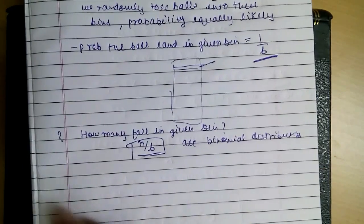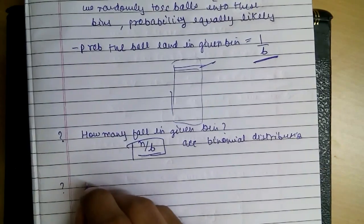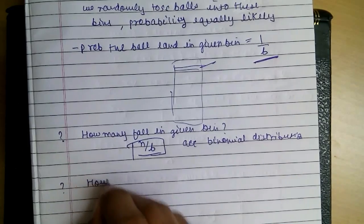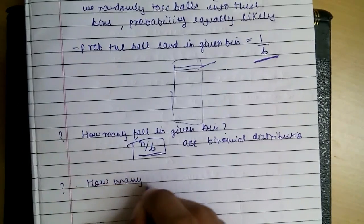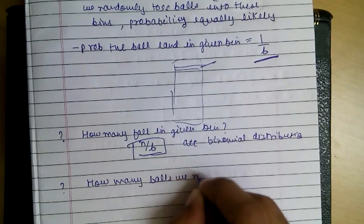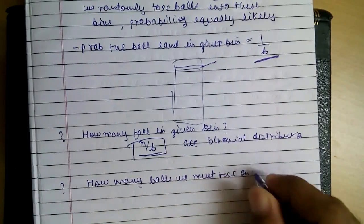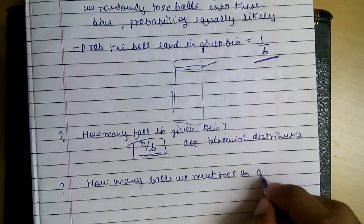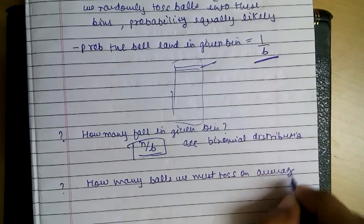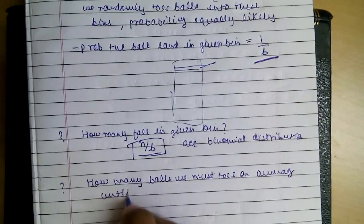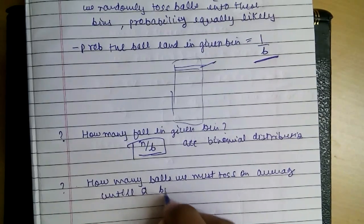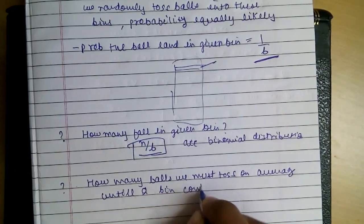The next question comes up is, how many balls we must toss on average until a bin contains a ball.